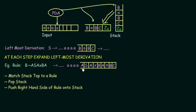So the fundamental operation is: match the stack top to a rule, pop the top-most element that matched, and then push the right-hand side of the rule onto the stack. This is what you do when you have a non-terminal on the top of your stack.